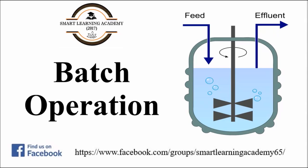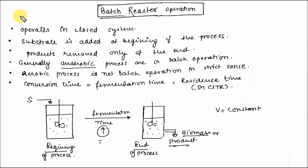Welcome to Smart Learning Academy. In this video tutorial I am going to discuss the batch operation, various material balance equations, and derivations including substrate consumption and product formation for the batch operation. This is the basic batch reactor operation: it operates in a closed system, substrate is added at the beginning of the process, and product is removed only at the end. It depends upon the conversion time or fermentation time.